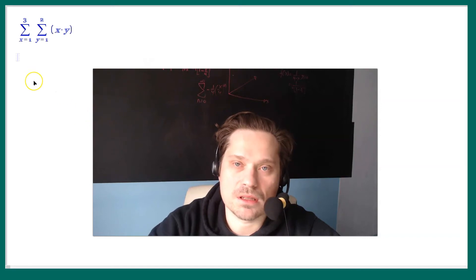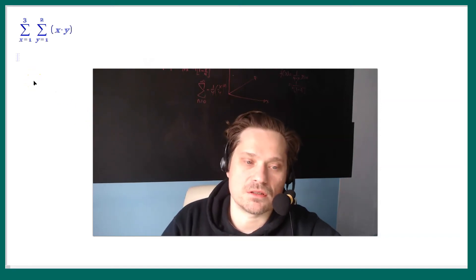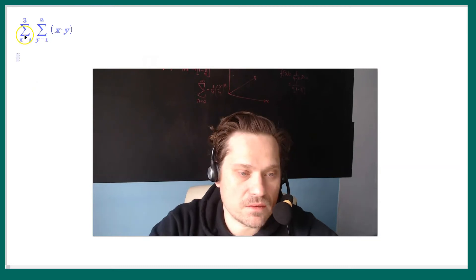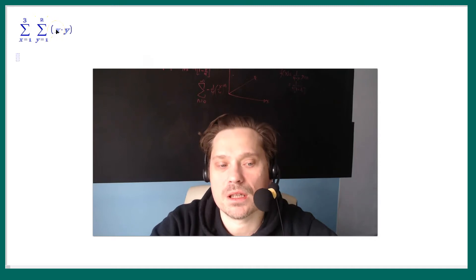Friends, in this one I'm going to talk about this double sum, so I will illustrate what's happening here graphically. We have the double summation: x goes from 1 to 3, and then y goes from 1 to 2, and the expression is x times y.